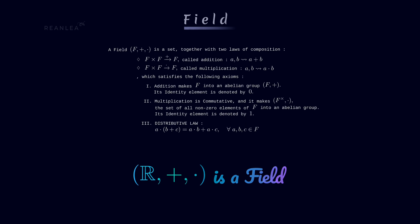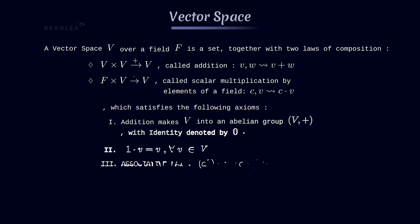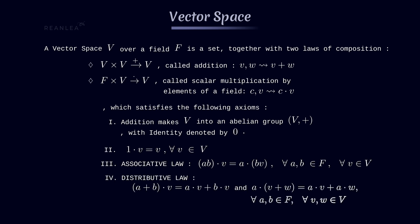Now let's define the vector space. A vector space over a field is a set of vectors together with two laws of composition called vector addition and scalar multiplication, which satisfy the following axioms: addition makes V into an abelian group, and its identity is denoted by zero; and 1 dot v equals v for all v in V, where 1 is the identity element of the scalar field and dot represents scalar multiplication.